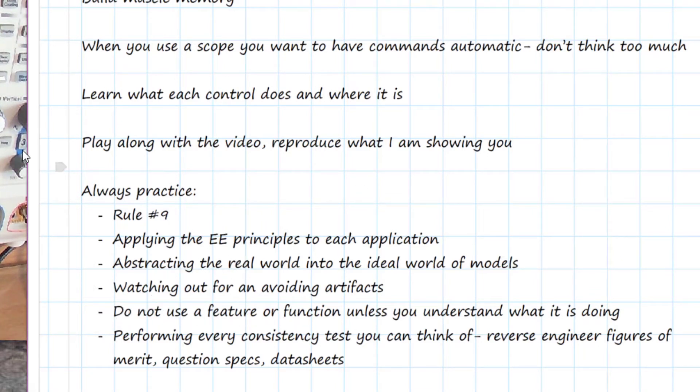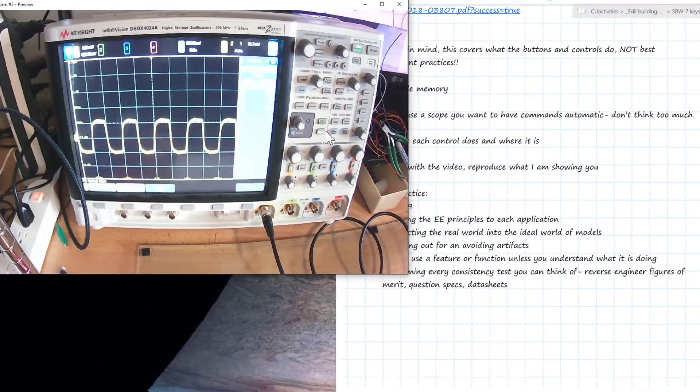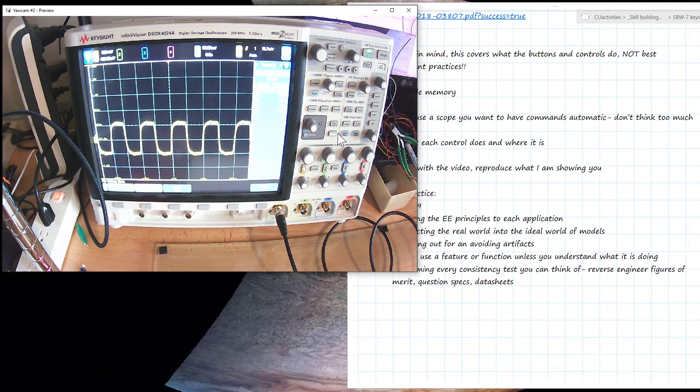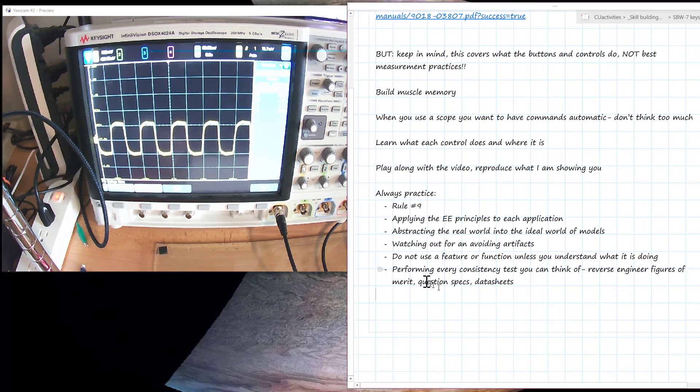Generally, this is an incredibly powerful scope. It can do a lot of different things. Be careful when you're using one of the features if you don't understand what it's doing. Almost always, you will get a number out. But if you don't understand what the scope is doing to get that number, it may either introduce an artifact or be misleading. So pay attention to what the different functions are doing and think about what's going on inside that scope to translate the measurement at the front connector into what we see on the front screen.